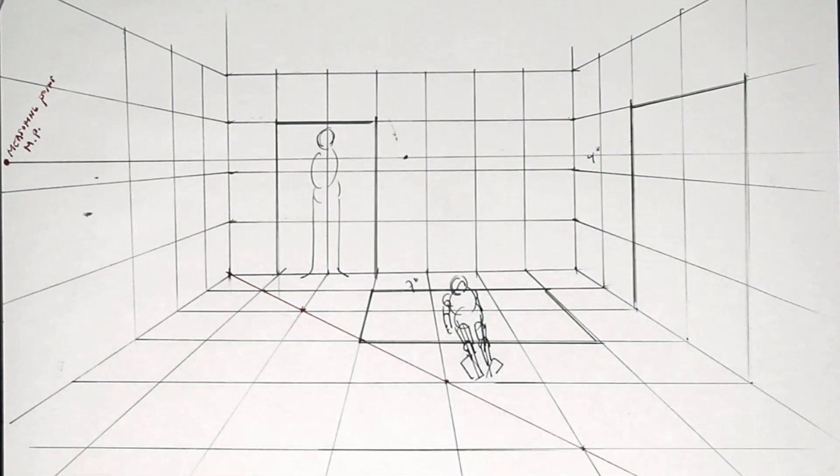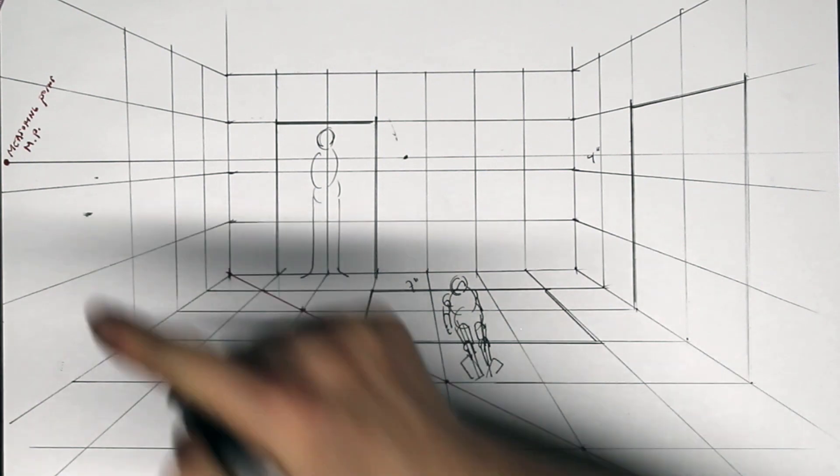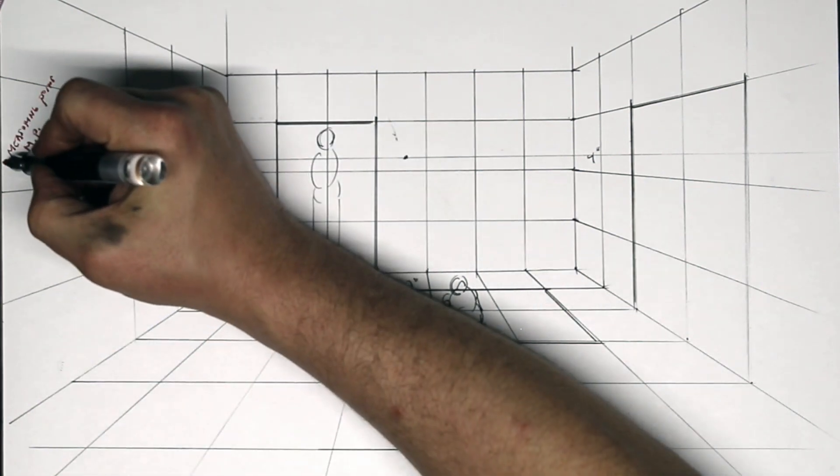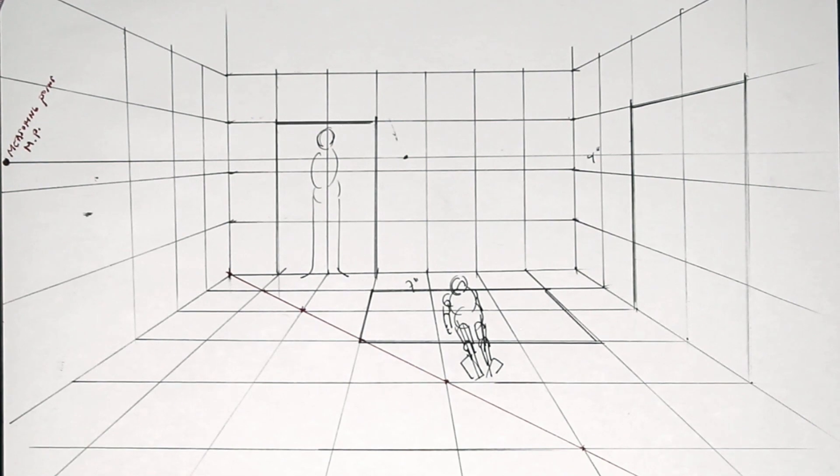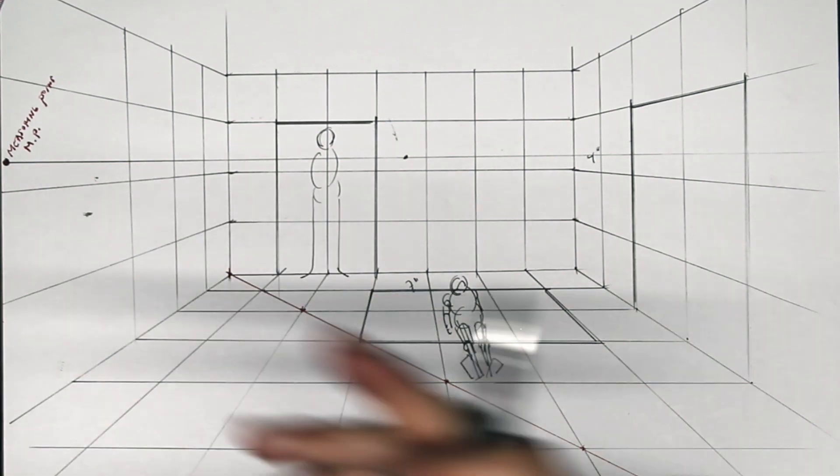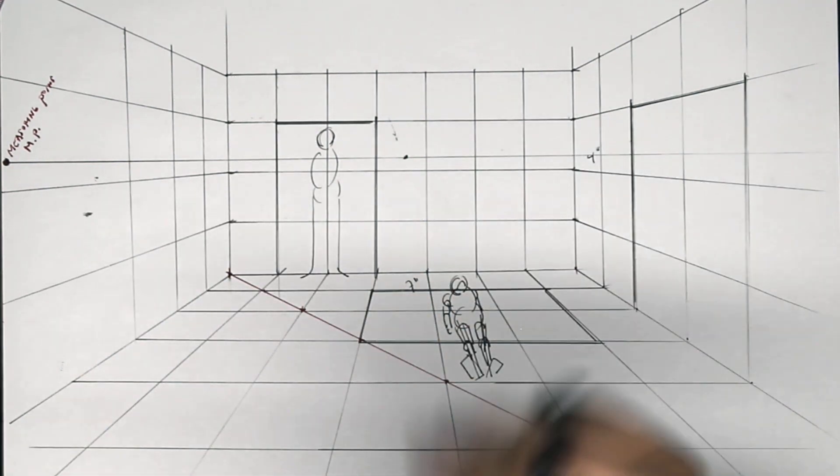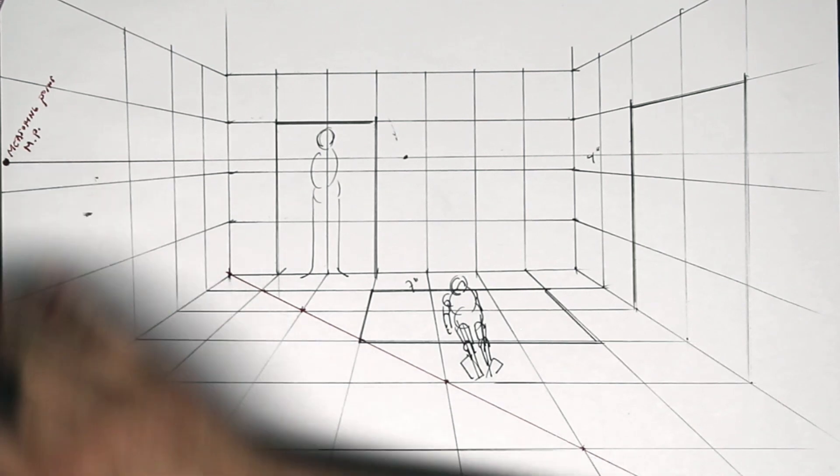So this grid method has multiple applications. We're going to use it a lot. But everyone remember the measuring point and how to use it, because we're going to continue using the measuring point not only to construct interiors but also objects, cubes, cuboid shapes. It's going to become increasingly important.